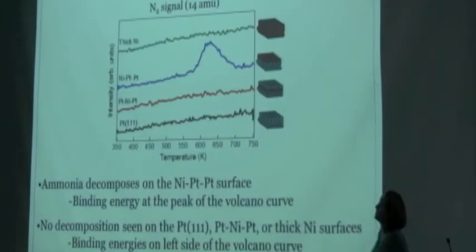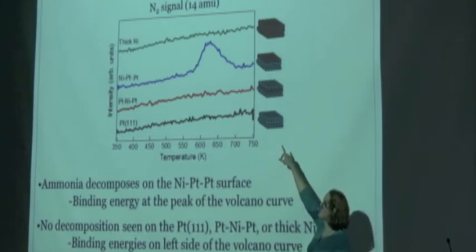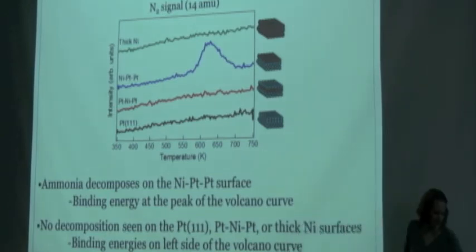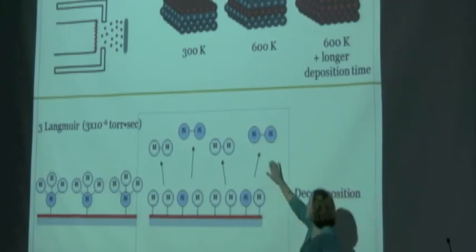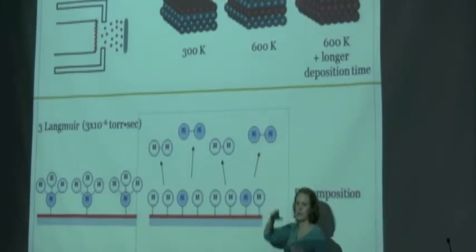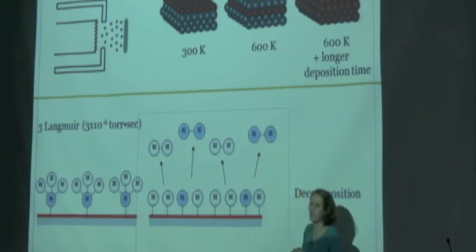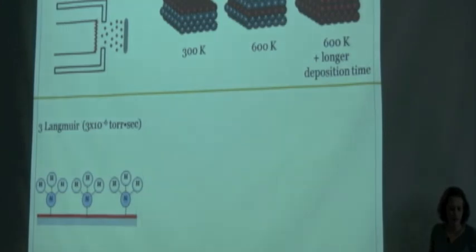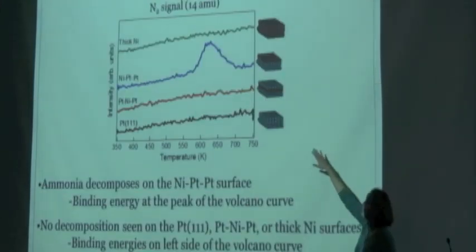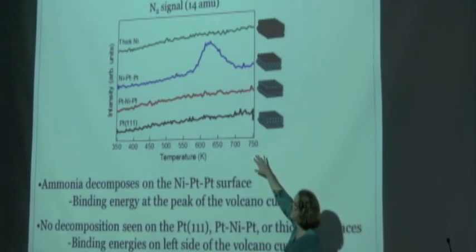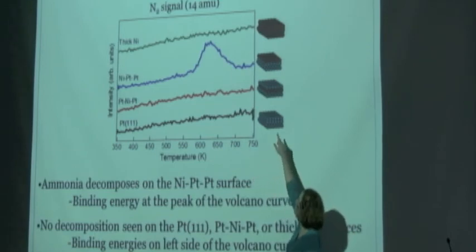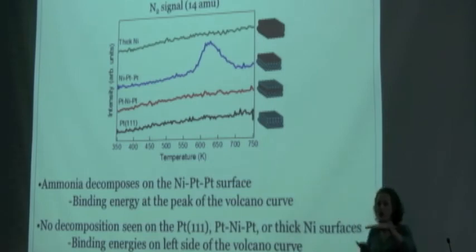When we do these experiments, we're looking at mass 28 — that's nitrogen coming off the surface. Sometimes when the nitrogen molecule goes into the mass spectrometer it can break its bonds, so you'll also see mass 14 alongside mass 28. We're looking at mass 14, or nitrogen, in this picture, and you can see only one of the surfaces has nitrogen coming off — which is the surface configuration of nickel on top of the platinum.